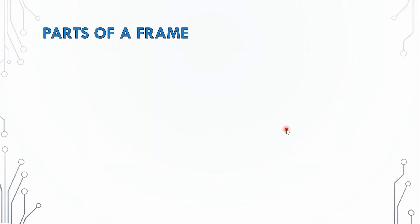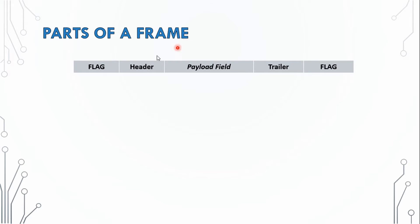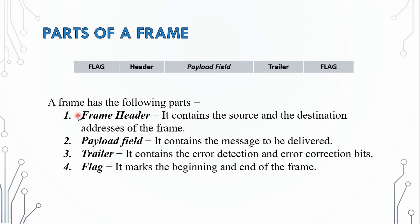The parts of a frame are: flag, header, payload, trailer, and flag. A frame has the following parts. The first part is the frame header — it contains the source and destination address of the frame. The second part is the payload field — it contains the message to be delivered.